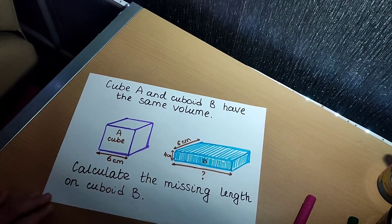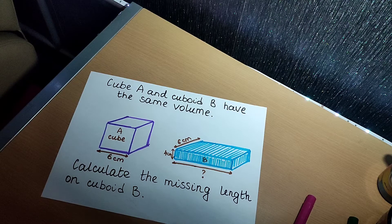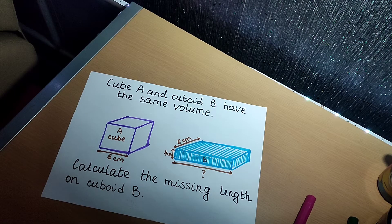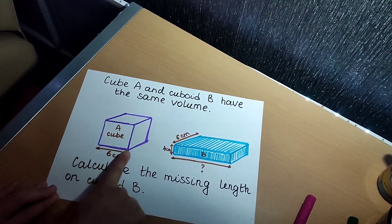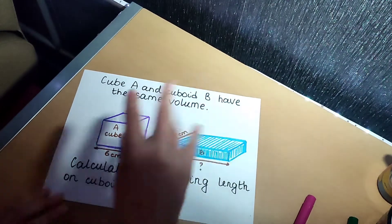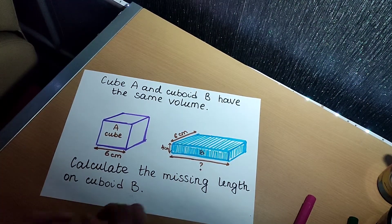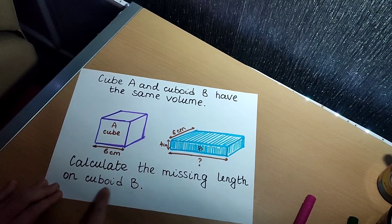Now in Year 6, you're supposed to have all this prior knowledge about how to work out the volume of a 3D shape. In your reasoning stats paper, they're not actually going to ask you to just find the volume of a certain shape — the word problems are going to be more complicated, possibly two or three steps. So let's have a look at some examples. Cube A and cuboid B have the same volume — the same amount of space inside, the same number of tiny cubes. Calculate the missing length on cuboid B.